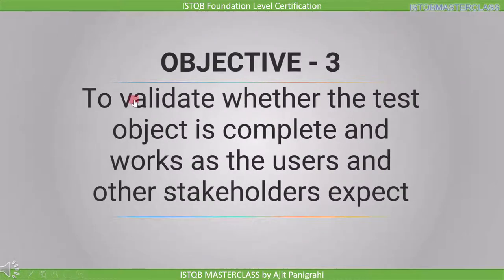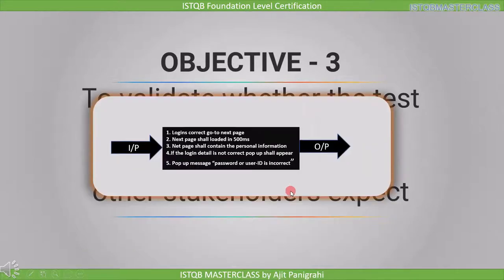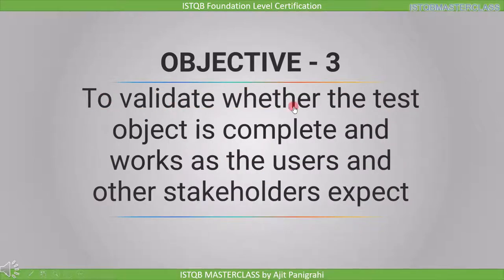The third objective is to validate whether the test object is complete and works as the user and other stakeholders expect. Test object means the object under test — it is defined as the component or system to be tested. When we are in the requirement stage, requirement is our test object; in the design stage, design is our test object; and in the implementation stage, code is our test object. As per the third objective, we need to provide input to the test object and check the output to see if it fulfills the stakeholders' requirements. Since we are executing the code here, this comes under validation.